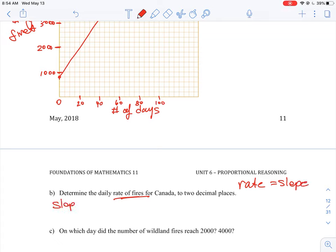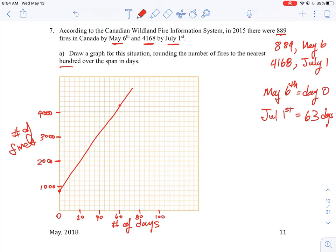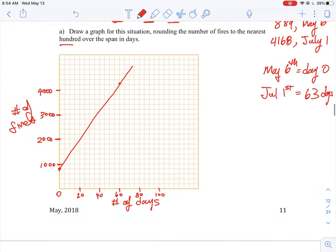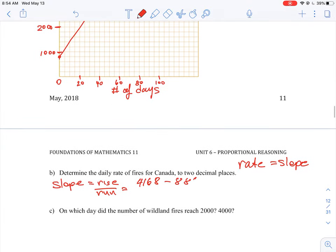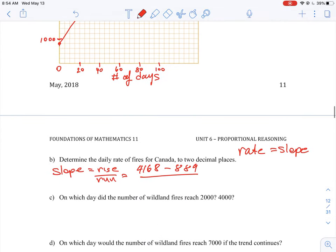So slope is rise over run. And in this case, we can just use our two points here. We know this is kind of a linear graph. So we know that on the rise is the number of fires. So we had 4,168 fires on July 1st, and then we started with a total of 889 on May 6th. So that means for 63 days, at 63 days we had 4,100 fires, and on day zero we had 889. So this would be how we would calculate our slope.